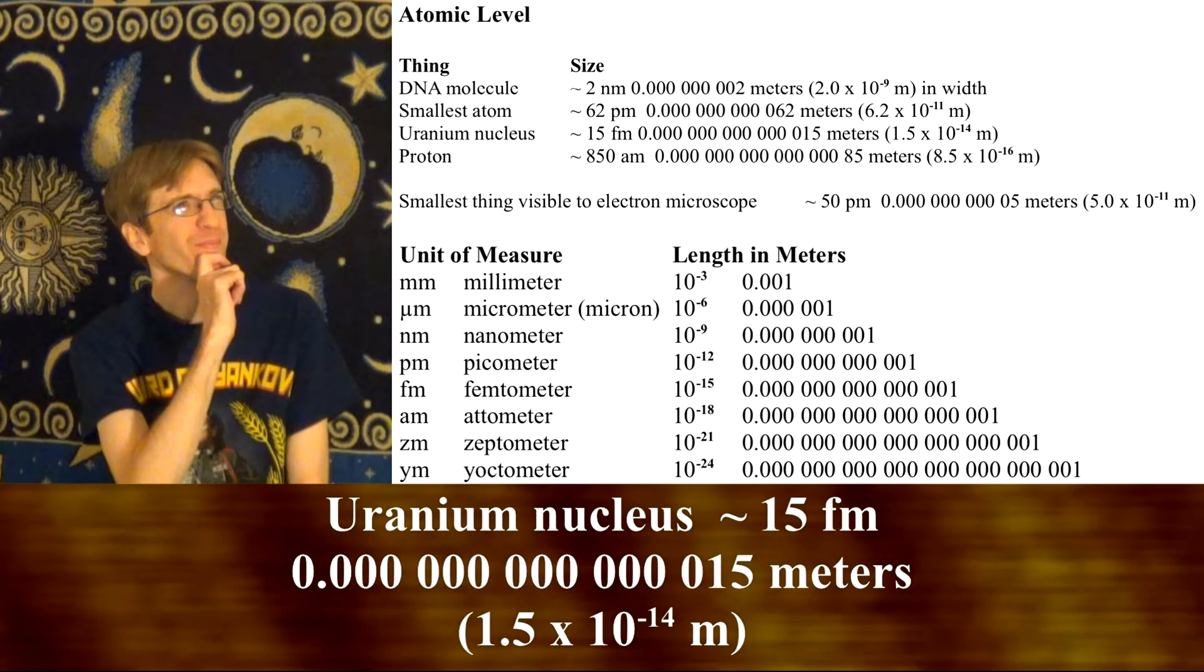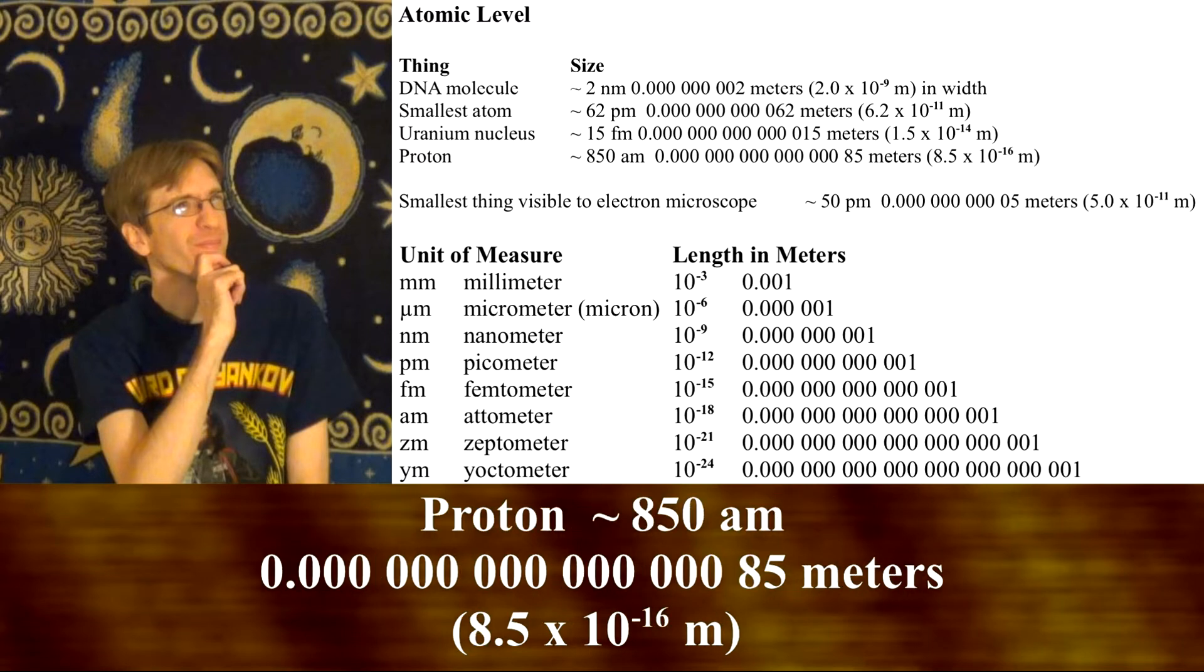The nucleus of a uranium atom is about 15 femtometers in size, and a single proton is around 850 attometers in size.